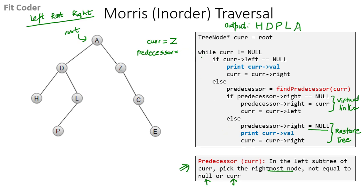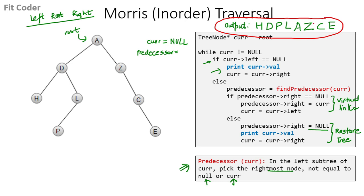In the next iteration current is Z. Left of Z is null, so we print Z and go to the right of Z, which is C. We check the left of C — null — so we print C and go to the right of C, which is E. Left of E is null, so we print E, and the right of E is null. In the next iteration we check while current is not equal to null — current is null, so the while loop terminates. This is the inorder output we obtained using Morris traversal.